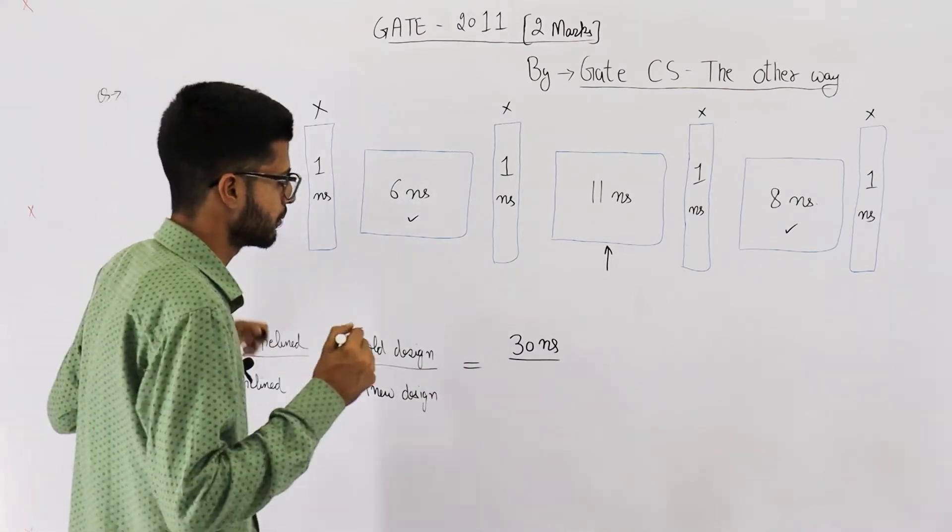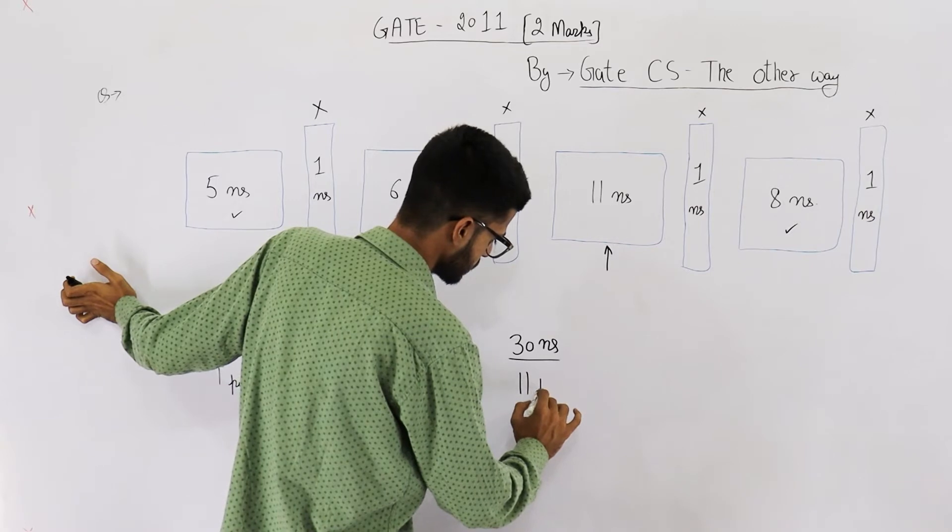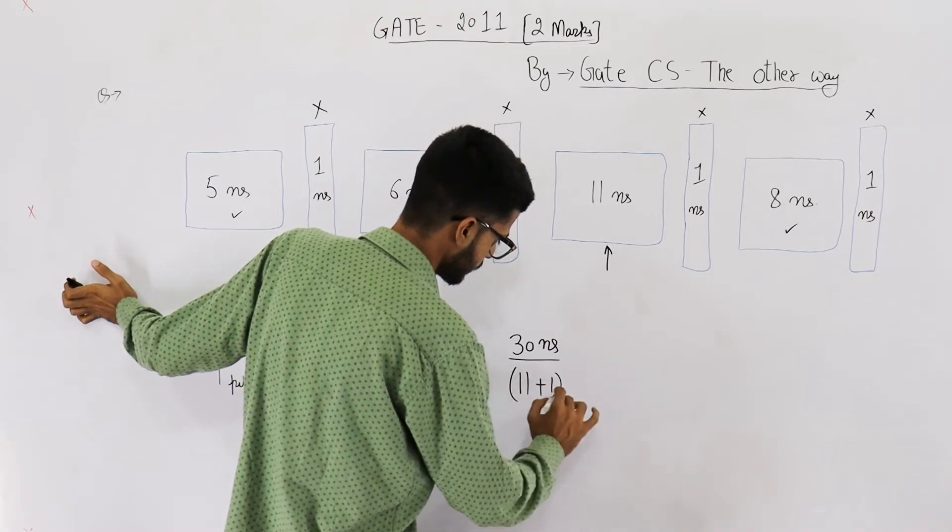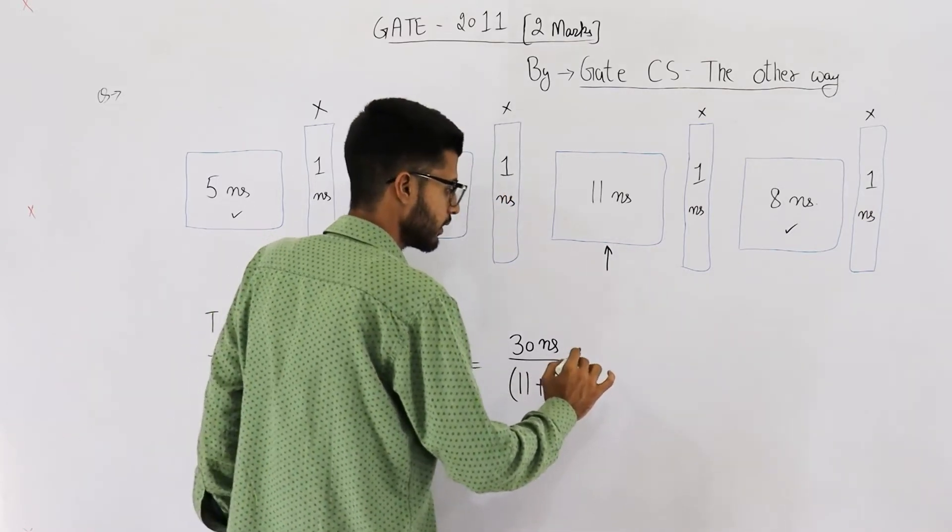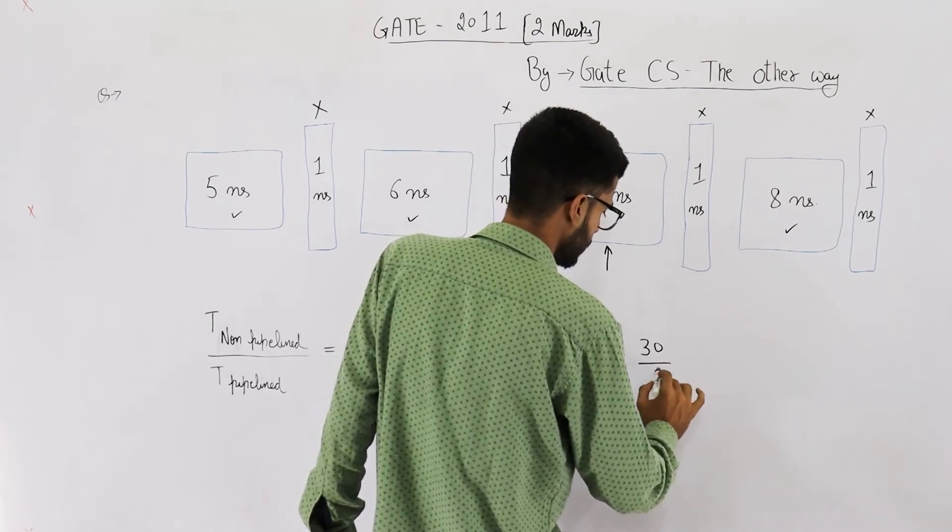That means pipelined version requires 11 nanoseconds plus one nanosecond. This comes out to be 30 divided by 12.